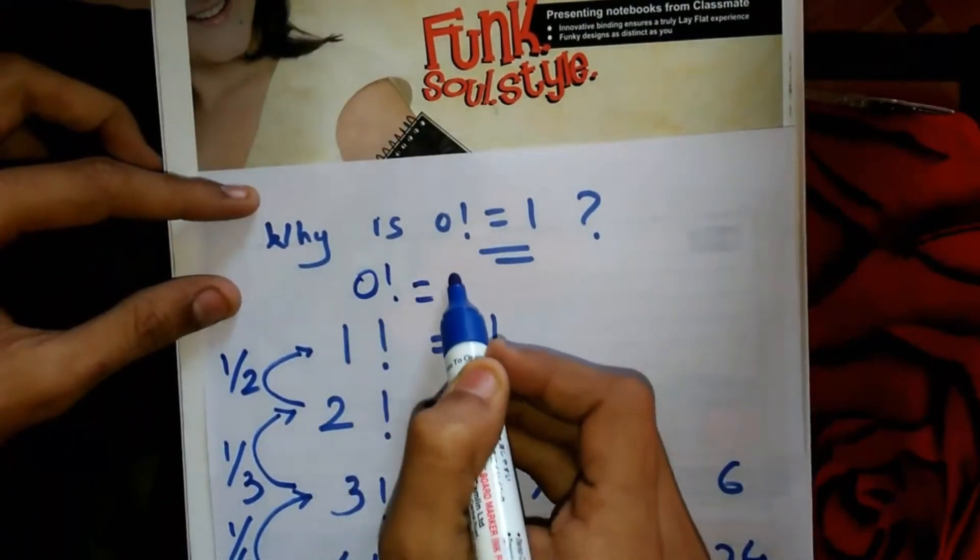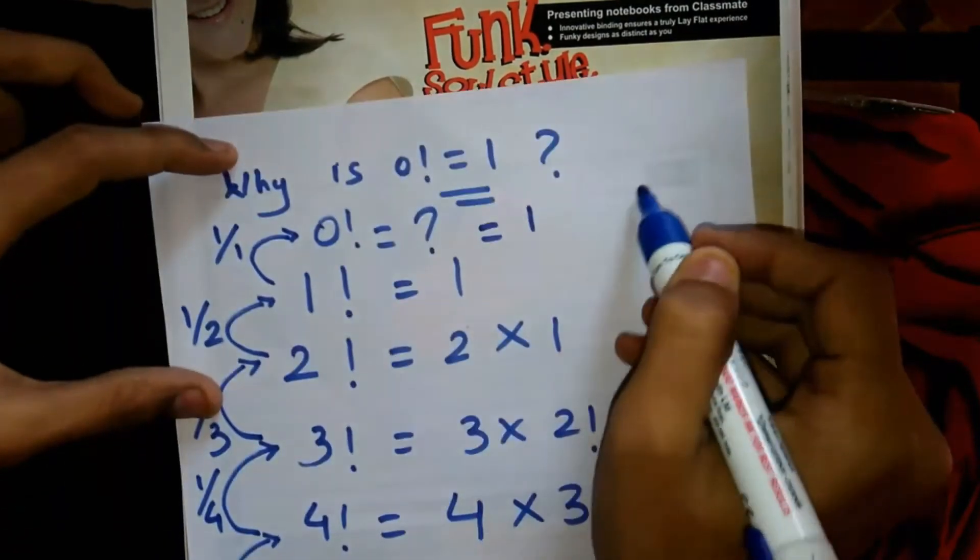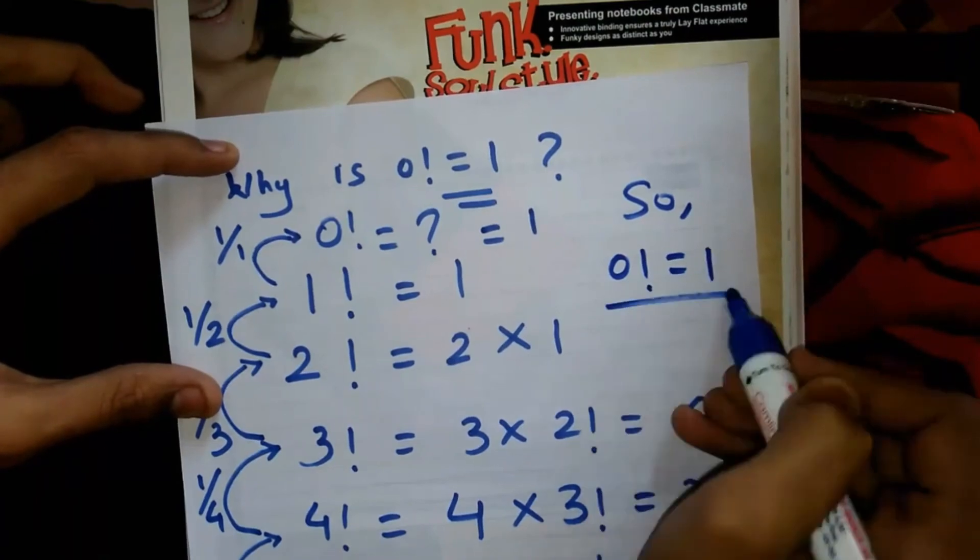So what's the value of 0 factorial? When 1! is divided by 1, we get 0!, which equals 1. Now it is clear why 0! = 1.